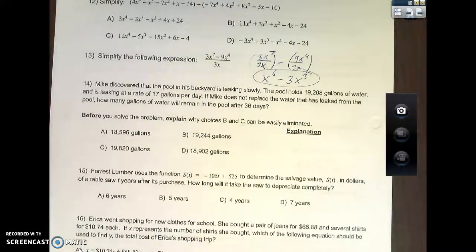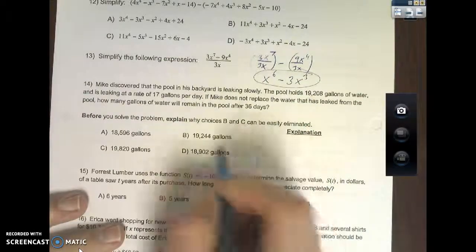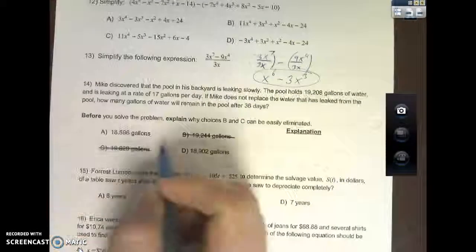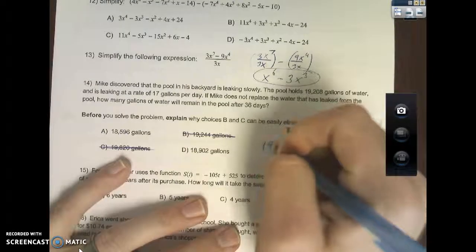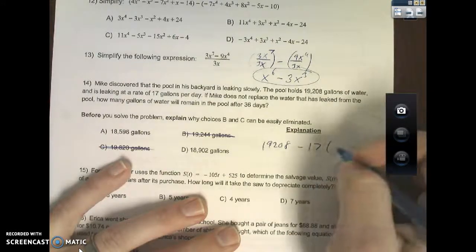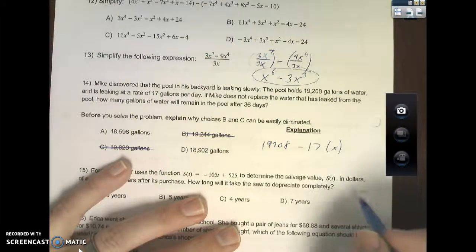Now Mike discovered the pool in his backyard is leaking slowly. The pool holds 19,208 gallons of water and is leaking at a rate of 17 gallons per day. If Mike does not replace the water that has leaked from the pool, how many gallons of water will remain at 36 days? Before you solve the problem, explain why choices B and C are eliminated. The pool has 19,208 gallons of water. B and C have more than that, doesn't make any sense at all.